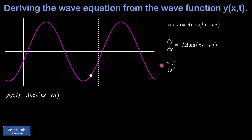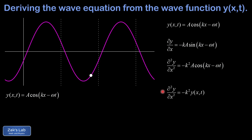We continue by taking a second derivative, del squared y del x squared, whose interpretation is the curvature or concavity of the string — positive means upward curvature, negative means downward curvature. Taking this derivative gives us the cosine function and another factor of k from the chain rule, yielding negative k squared a cosine kx minus omega t. The most important thing is that this is proportional to the original wave function, so the second position derivative equals negative k squared times the original function. That result gets a box.